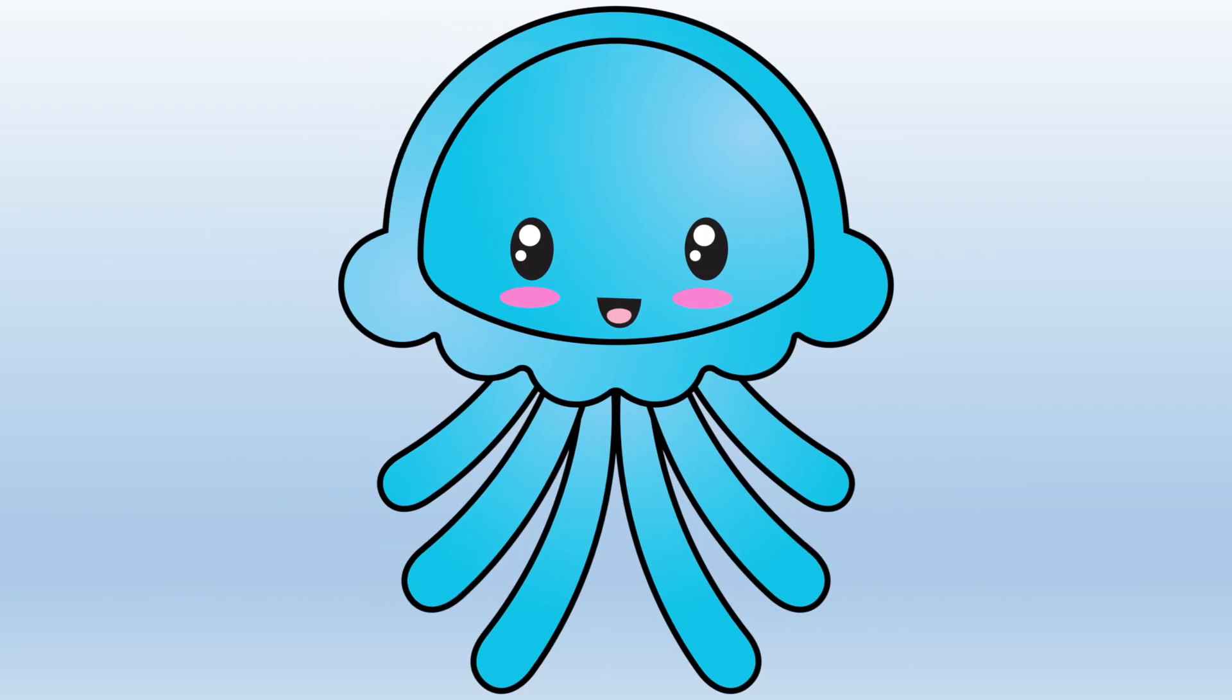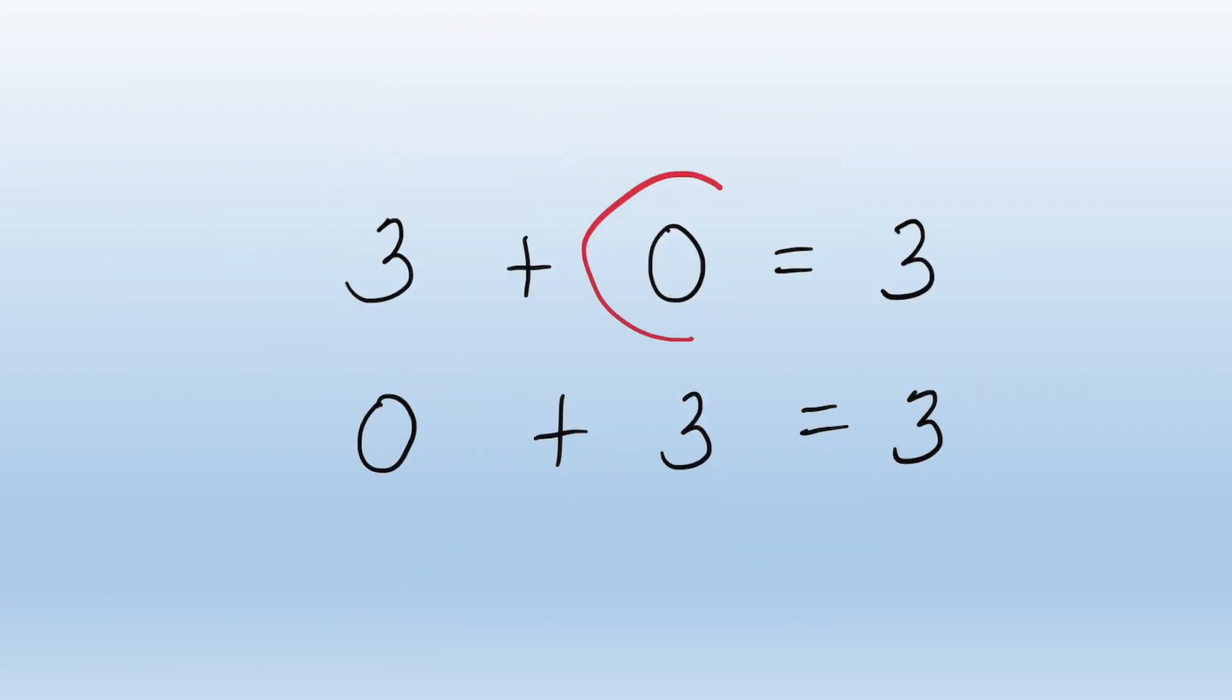Joey noticed something cool about the addition facts. When you add zero to any number, that number stays the same. This quality has a special name. It's called the identity property of addition.